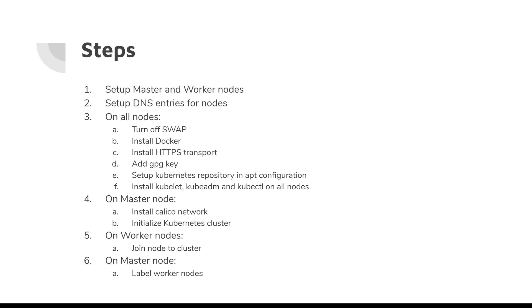You will need at least one master node computer along with worker nodes. Make sure the operating system is installed and working properly, and that nodes are talking to each other using IP addresses. It's preferable to have static IP addresses so that when you reboot, the IP addresses do not change. Kubernetes also relies on hostnames, so you should set up proper DNS entries on these nodes so they can communicate through hostnames rather than potentially unreliable DHCP-assigned IP addresses.